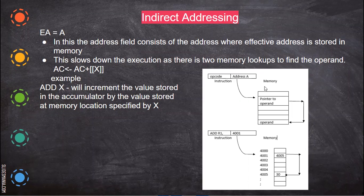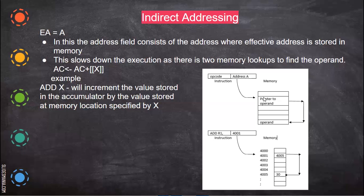In this video, we will be seeing about indirect addressing. The effective address is nothing but which is present in another memory location. This is an opcode and this is an instruction format where this is an opcode and this is representing some address memory location. Now it will go and search in that. The data present here is not actual data — it is nothing but another memory location. In order to get the data, it first has to move to this memory location where the address of another memory location is given, and it has to go there.